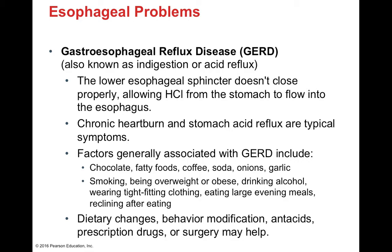Gastroesophageal reflux occurs when the lower esophageal sphincter doesn't close entirely, allowing hydrochloric acid into the esophagus, causing heartburn. Dietary factors that can worsen it include chocolate, fatty foods, coffee, soda, onions, and garlic. Lifestyle factors include tight-fitting clothing, smoking, obesity, large evening meals, and reclining after eating. Dietary changes and behavior modifications can help treat this condition.